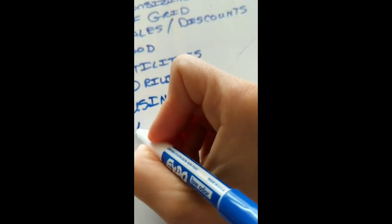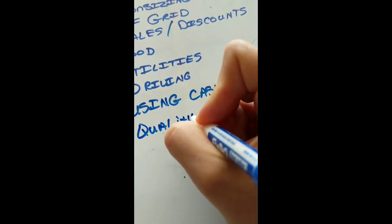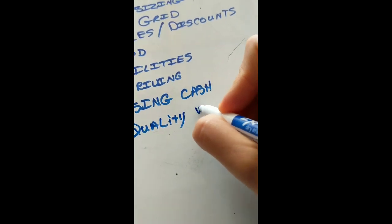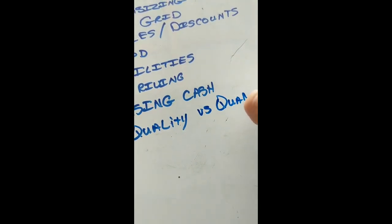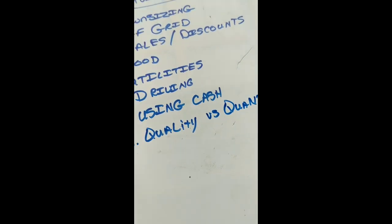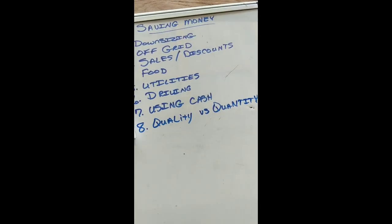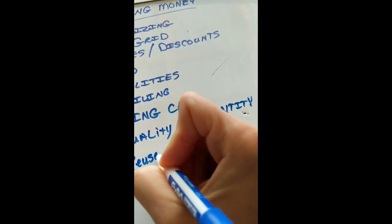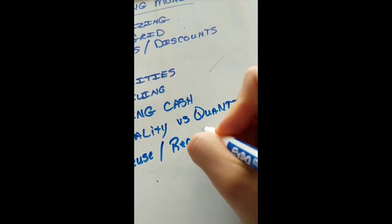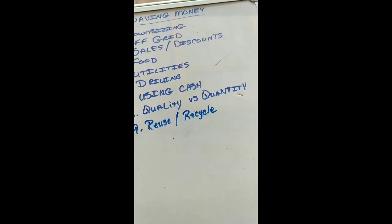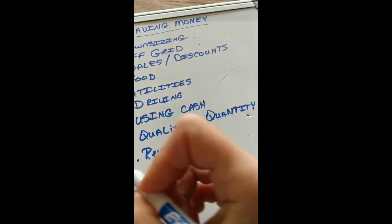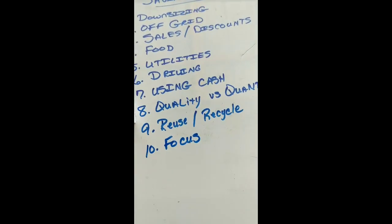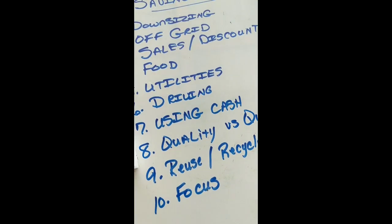What's next? Eight would be quality versus quantity. Number nine, reuse and recycle. That's how we built most of our house that we have here. Our little tiny house. And ten, focus. What is your focus? If you've got the right focus, you end up saving money in a lot of other areas, too.